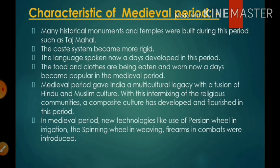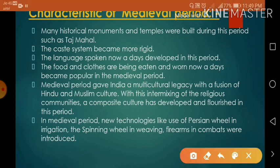Medieval period gave India a multicultural legacy with a fusion of Hindu and Muslim culture. With this intermixing of religious communities, a composite culture developed and flourished in this period. In the medieval period, new technologies like the use of Persian wheels in irrigation, spinning wheels in weaving, and firearms in combat were introduced.